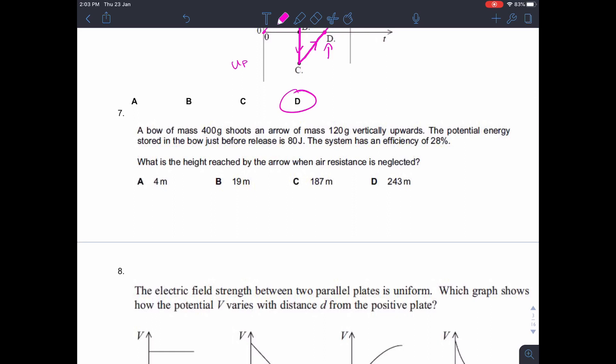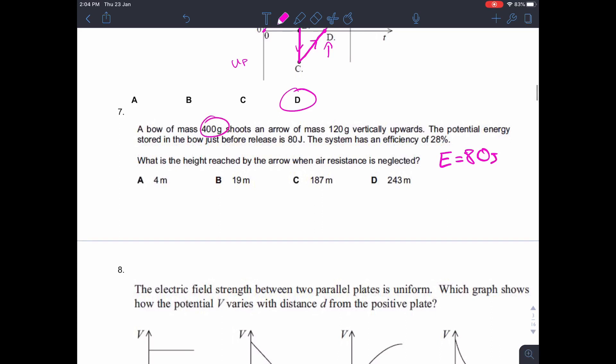A bow of mass 400 grams shoots an arrow of mass 120 grams vertically upwards. The potential energy stored in the bow just before release is 80 joules. The system has an efficiency of 28%. So we've got the energy of the bow just before release is 80 joules. And all of that is going to be converted into kinetic energy of the arrow, not kinetic energy of the bow.